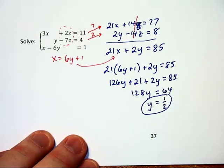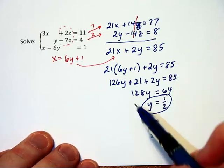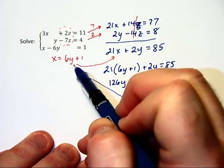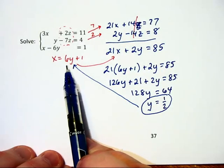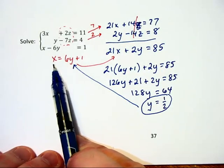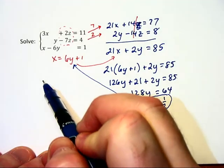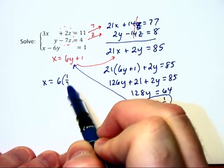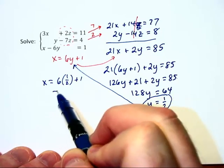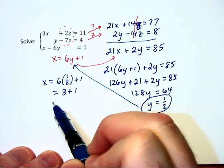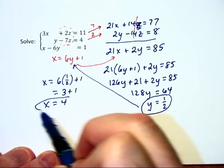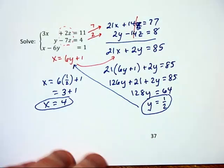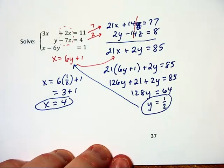Now we need to find x and z. Well, x is really easy to find by using this equation I have in red here, which already has x isolated. So x will equal 6 times 1 half plus 1. Well, that will be 3 plus 1, and therefore, x will equal 4, and there's a second part of our solution.